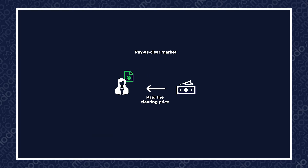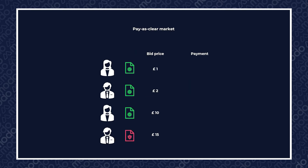In a pay as clear market, things work slightly differently. Instead of receiving my bid price, everyone who is accepted in the auction receives the highest accepted bid price, also known as the market clearing price. So if my £1 bid is accepted along with another bid priced at £10, I'll receive £10 and so will everyone else who was successful in the auction. This is precisely how pricing and remuneration works in dynamic containment.